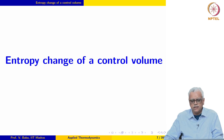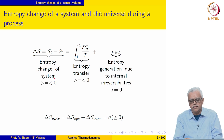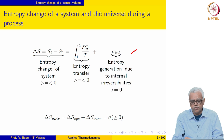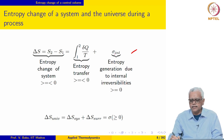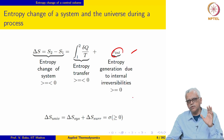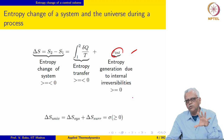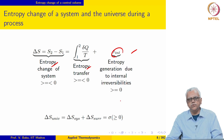The starting point for this development is something we discussed in the previous course. We derived this expression for the change in entropy of a system as it undergoes a process. Delta S, the change in entropy of the system, is the sum of two quantities: the first is the integral from 1 to 2 of δQ over T, which is the entropy transfer term, and the second is σ_int, the entropy generation due to internal irreversibilities.